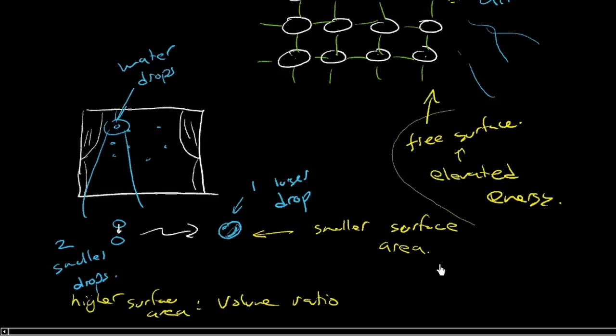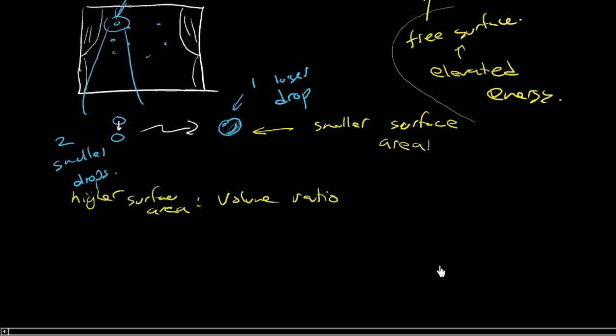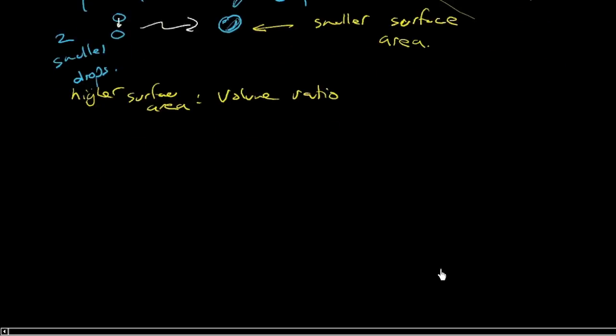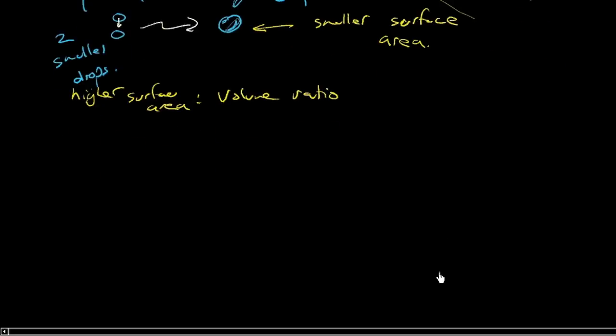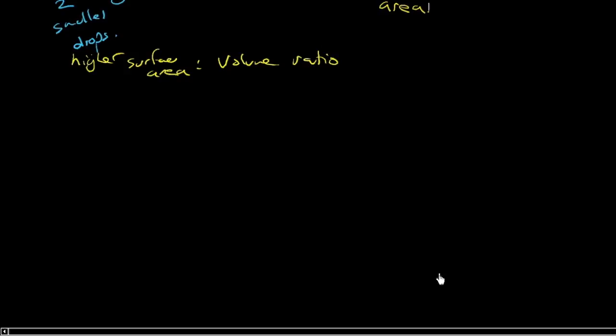And so that's why you see two drops come together and form one. So we know that a free surface is at an elevated energy. Well, what about an internal surface? So to look at an internal surface, we'd usually call that an interface. But we want to look for an internal surface.